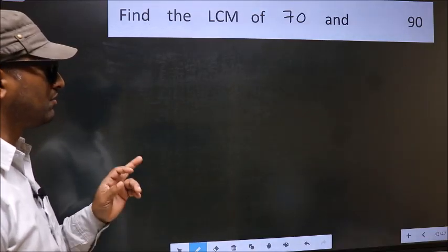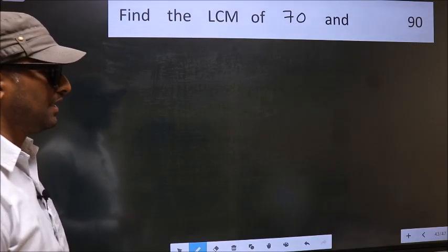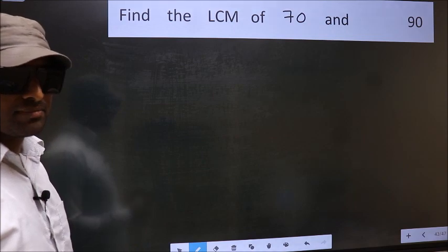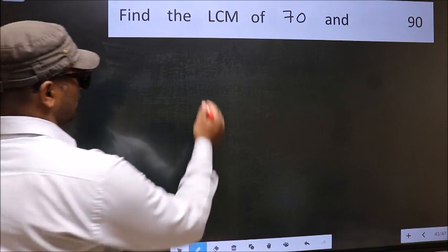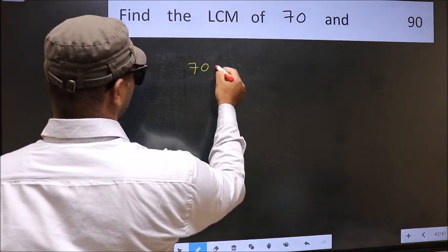Find the LCM of 70 and 90. To find the LCM, we should frame it in this way: 70, 90.